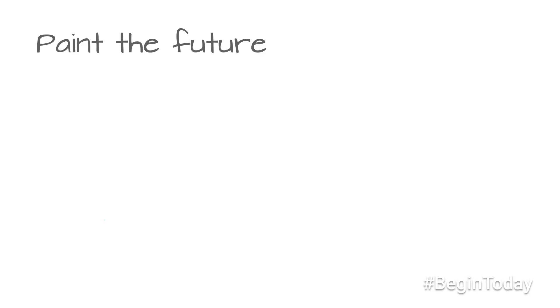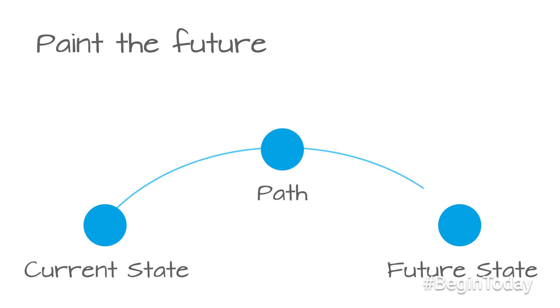In previous sections of this series, you learned about how paper prototyping, sketching, and digital prototyping tools can help you explore your ideas and set a direction for your design team. At the core, prototypes are stories about the future. They help us create a shared sense of our current state, our future vision, and the path we'll take to get there.